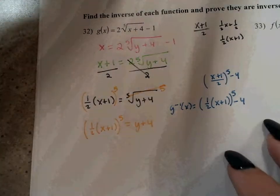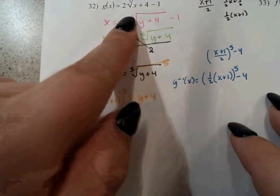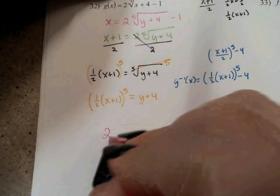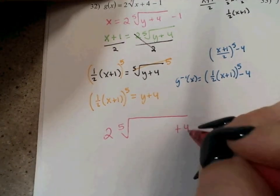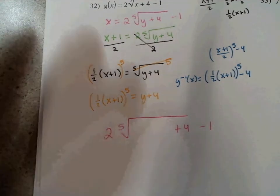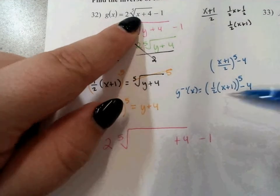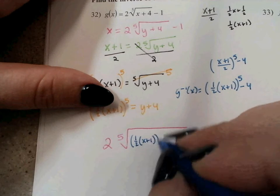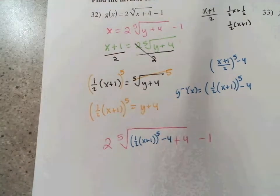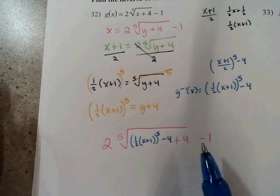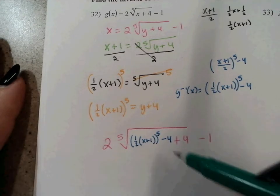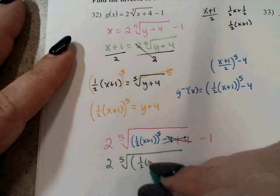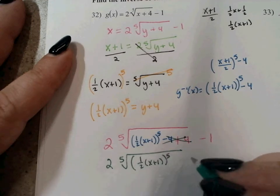Now we're going to prove they are inverses using composition. I'm going to plug g inverse into g. So g is that original fifth root function: 2 times the fifth root of something plus 4, minus 1. And inside that, for x in g, I'm going to replace it with all of g inverse: 1 half x plus 1 to the fifth minus 4.